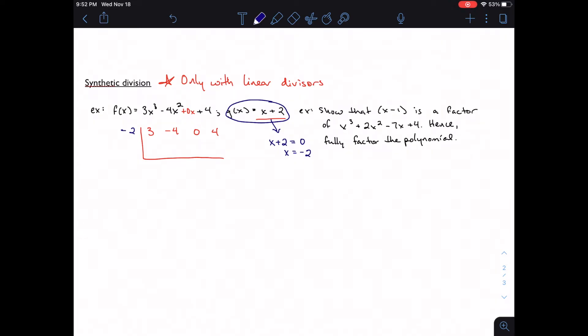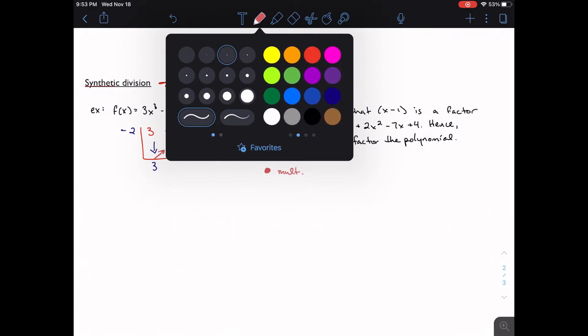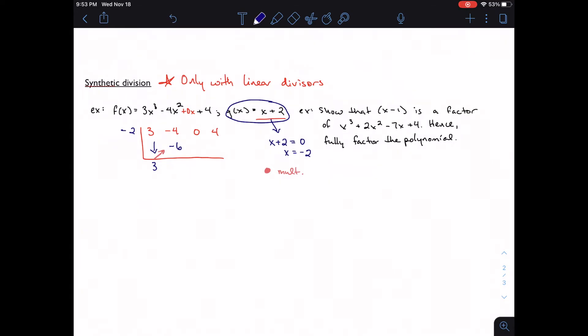And with synthetic division, we're actually kind of sort of doing things in reverse compared to long division. So I'm actually going to start by bringing down my first coefficient. Every time I move diagonally, I'm going to multiply. So anytime I move diagonally, I'm going to multiply by whatever I'm dividing by. So I'm multiplying by this negative two. So I get negative six. And then anytime I move vertically, I'm going to add. So negative six plus negative four is negative ten. And then I'm just going to repeat the process all over again. I'm going to multiply. I get 20. I'm going to multiply. I get 20. I'm going to multiply. I'm going to add.